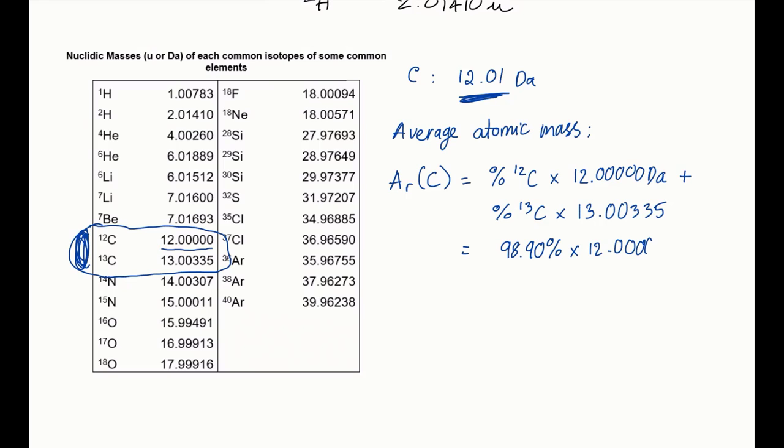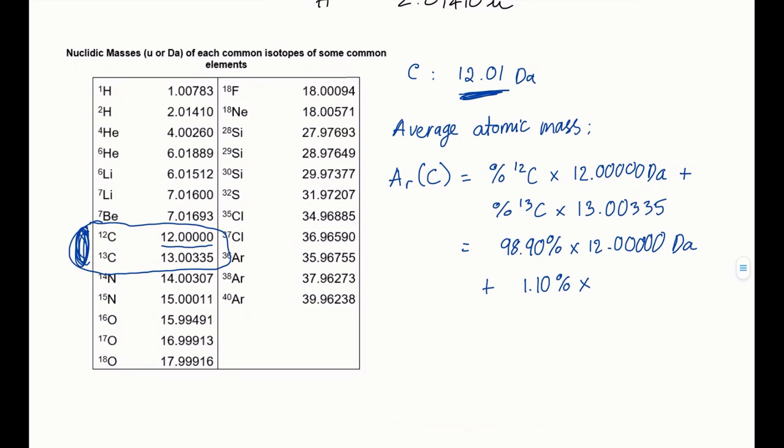So that's multiplied by 12 plus the natural abundance of carbon-13 is 0.10 percent, multiplied by the nuclidic mass. Now that is equal to roughly 12.011 Dalton. And that is what this number here is about.